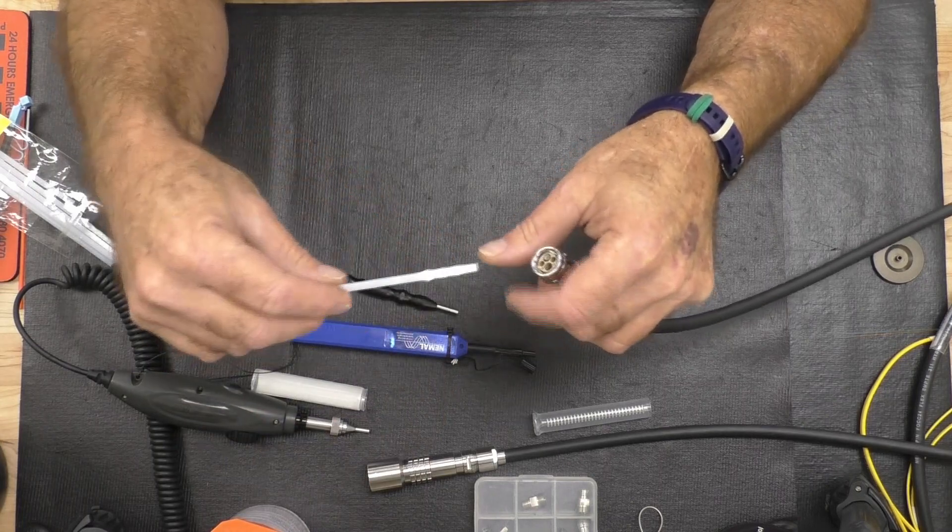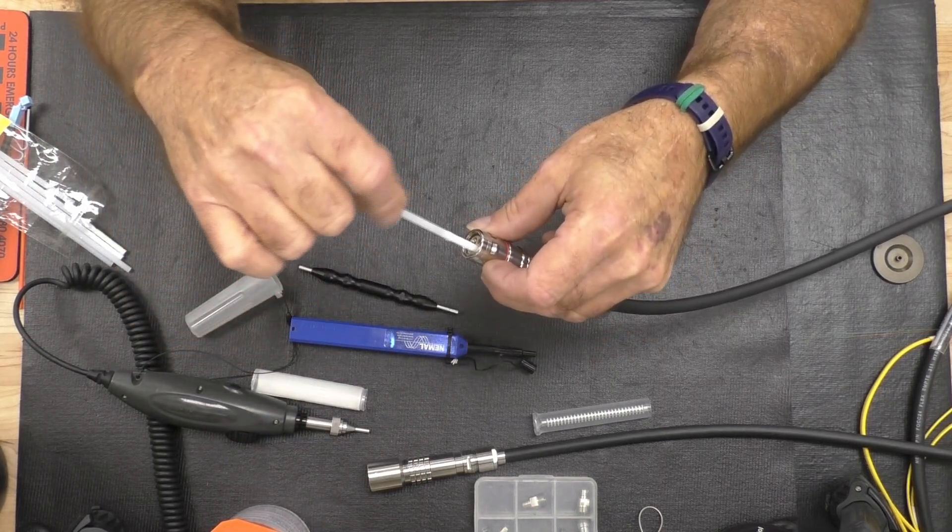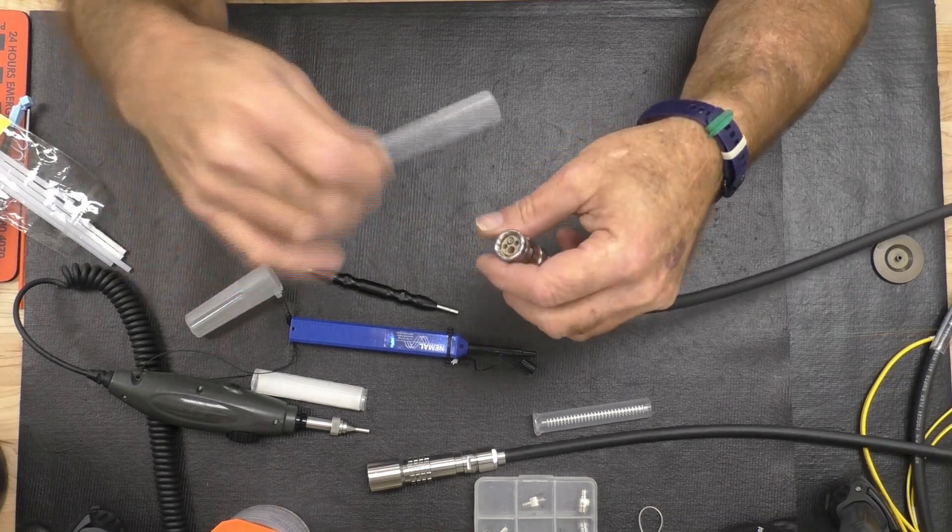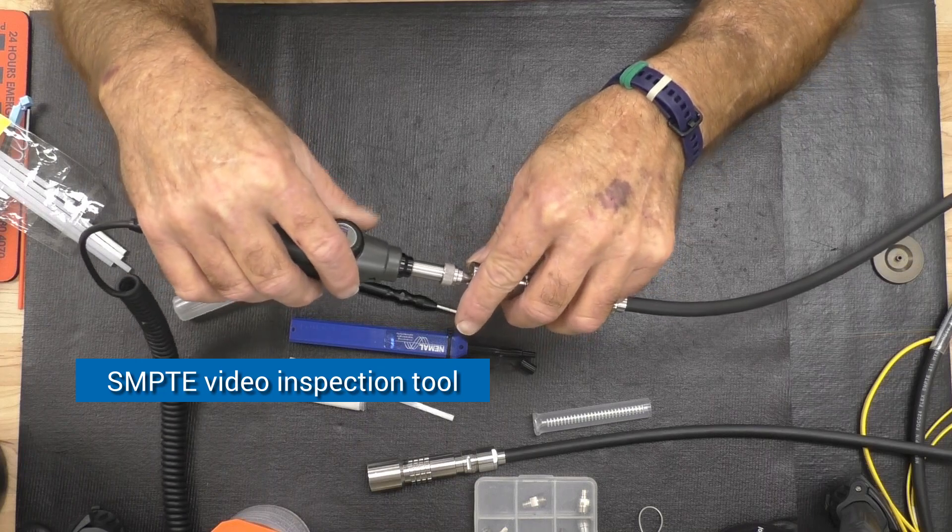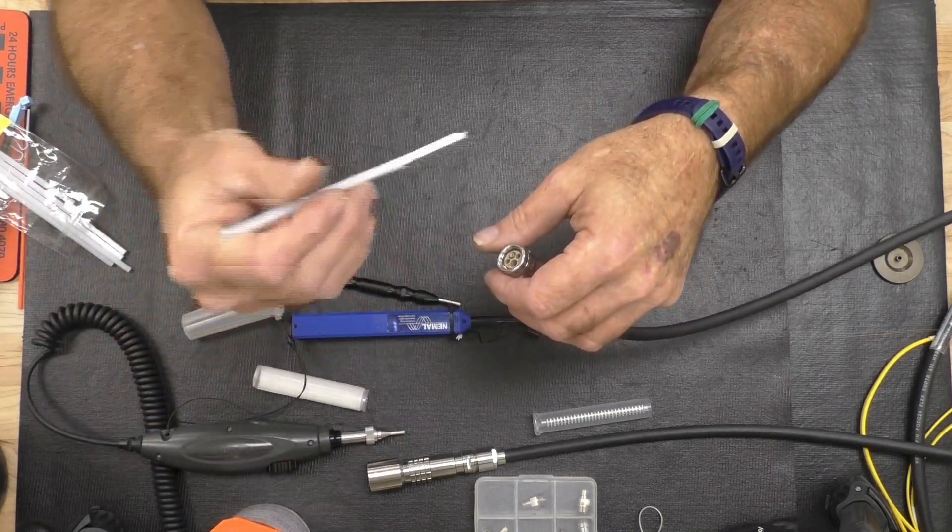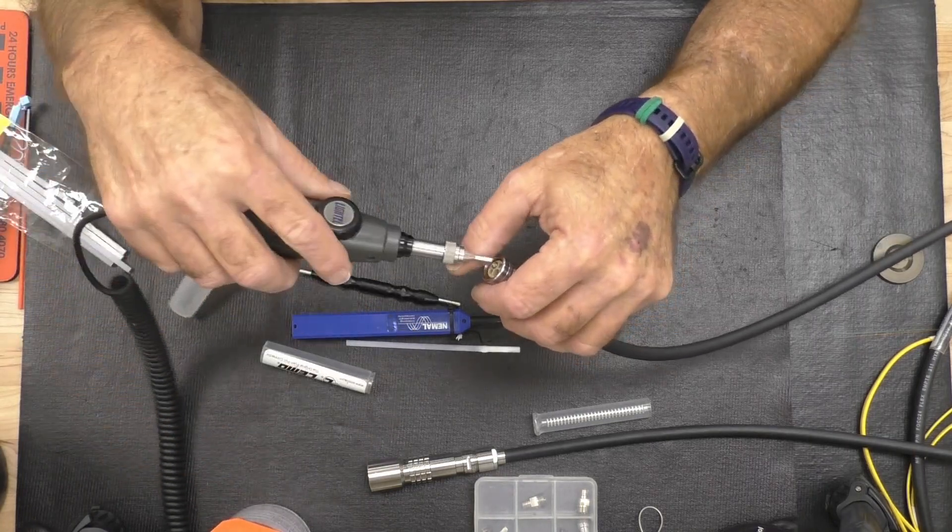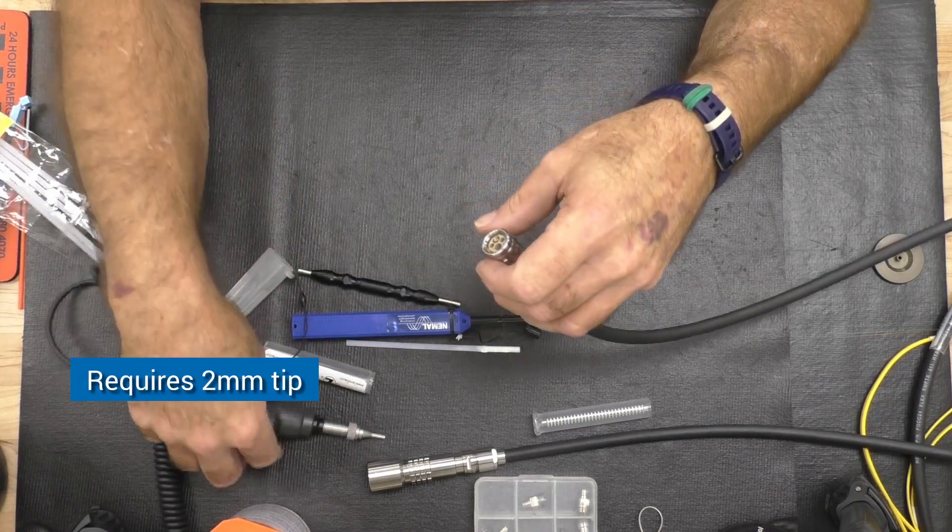Or we could use a Stickler tool, which fits beautifully down inside the connector, rotating in one direction. Depending upon the amount of cleaning needed, you would go wet-dry-wet-dry, always ending with a dry wipe, and then a visual inspection with a video scope. You'll require a two-millimeter tip.